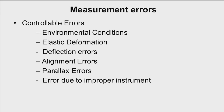Measurement errors can be classified into controllable errors and non-controllable errors. Controllable means we can control the amount of these errors by adjusting the working environment. Under controllable errors are: errors due to environmental conditions, errors due to elastic deformation, deflection errors, alignment errors, parallax errors, and errors due to improper instruments.